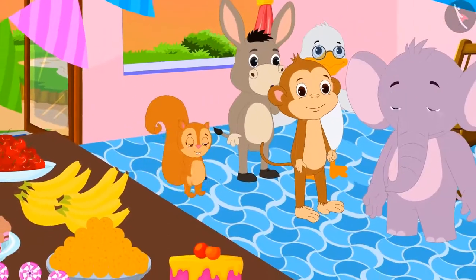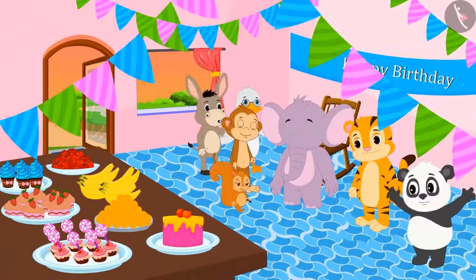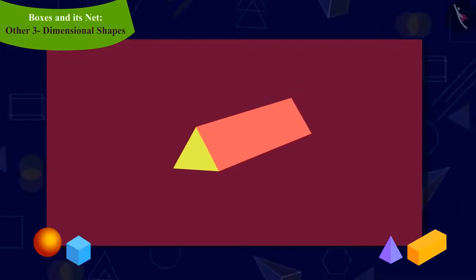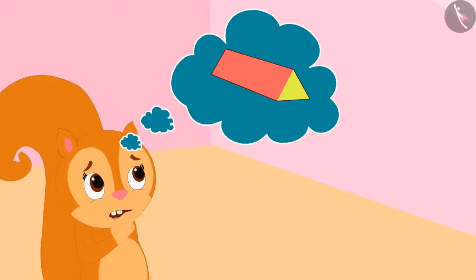When Chanda reached Appu's party, she saw that there were many people there. Chanda noticed that Babban brought a pencil box of this shape for Appu. Chanda is thinking that if she had to make a box of this shape, how would she do this?